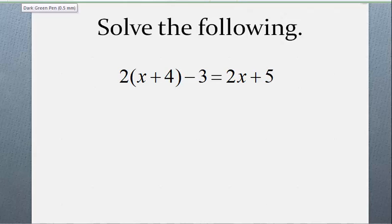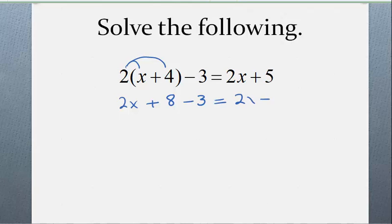In this first example, we're asked to solve this equation, and at first glance you may not notice anything special about it: 2 times the quantity x plus 4, minus 3, equals 2x plus 5. If we go about solving this, I'd distribute to get 2x plus 8 minus 3, and the right side is 2x plus 5. After distributing, I collect like terms on each side. On the left side I'll have 2x, and positive 8 minus 3 is plus 5. On the right side I have 2x plus 5. You might notice at this point that those two sides are identical — and if they're identical, the equation is an identity.